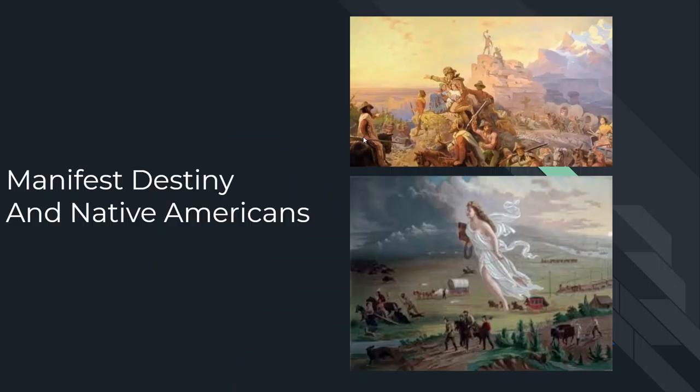Let's start with Manifest Destiny. I have here two very famous American portraits. They both depict the idea of moving west. The bottom one, for example, is supposed to be Lady Liberty moving towards the west. You can see settlers moving with covered wagons, stagecoaches, and trains — all moving towards the west, towards the unknown. In the top picture you see pioneers moving and pointing to the west.